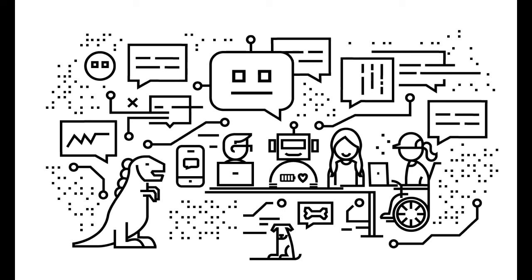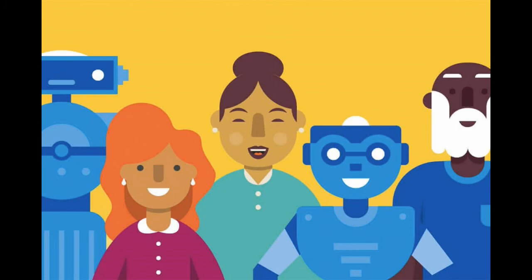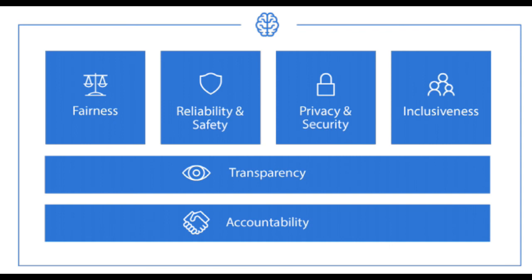Inclusive design practices can help system developers understand and address the potential barriers in a product environment that could unintentionally exclude people. By addressing these barriers, more innovative and better design opportunities can be created to benefit everyone. Underlying all the preceding values are two foundational principles: transparency and accountability.